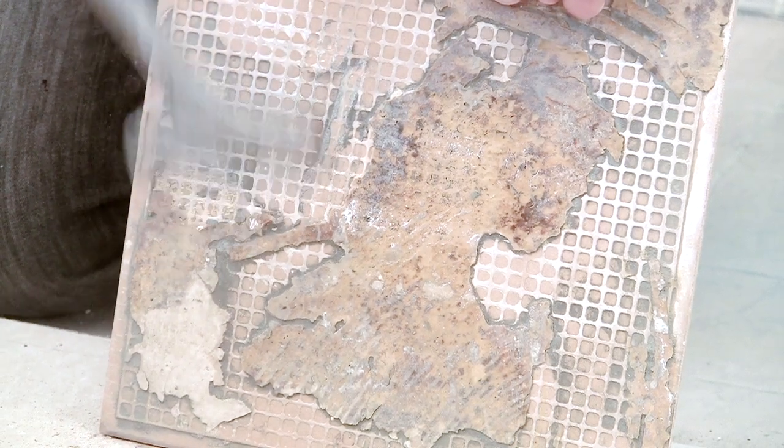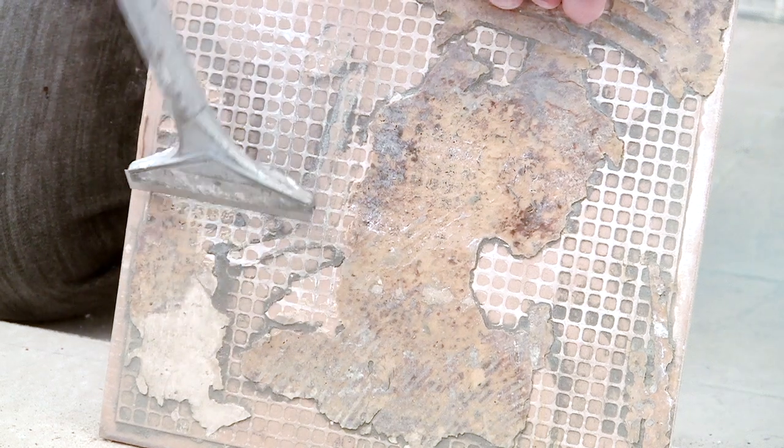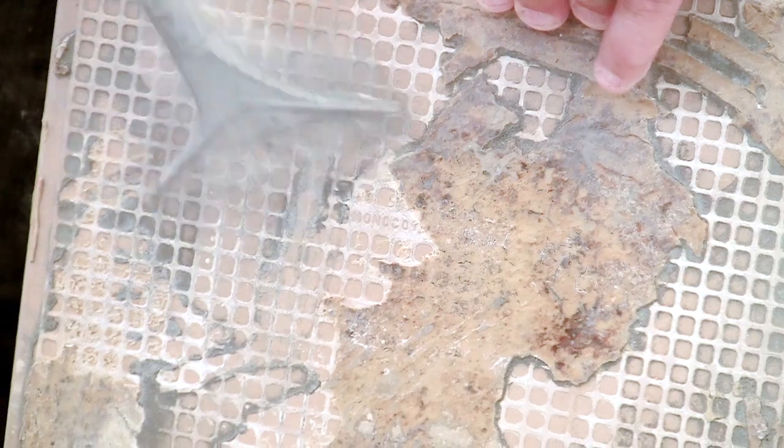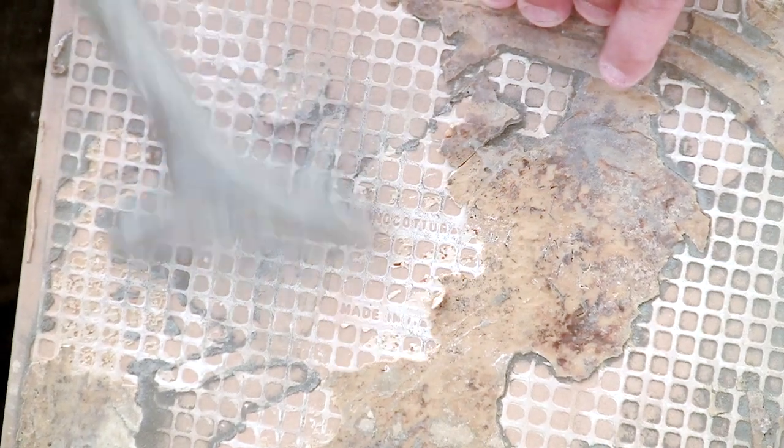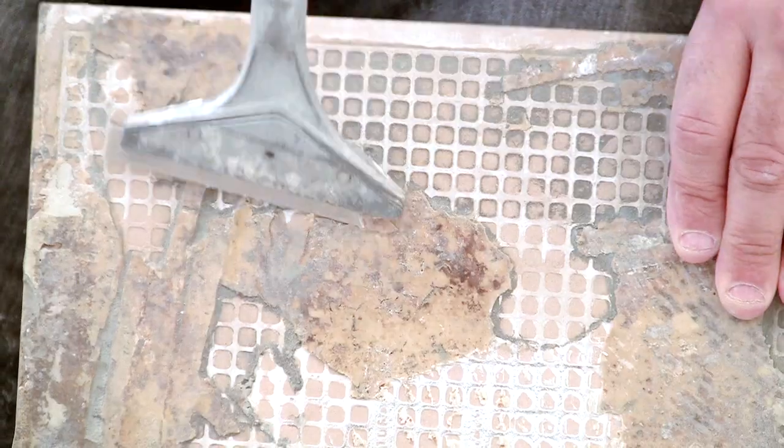So now we've removed the grout from the outside of our tile. What we're going to do now is grab this scraping tool, and we're going to use that to remove the thinset or glue that's on the back side of the tile so that we can get the tile to sit really flat in our new location.